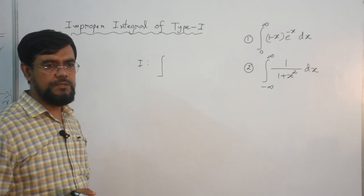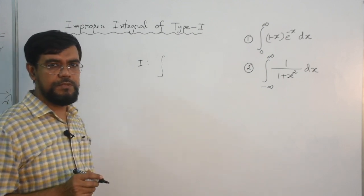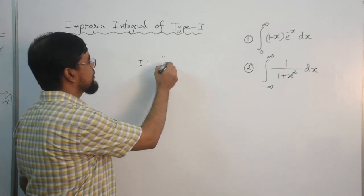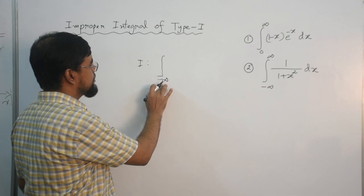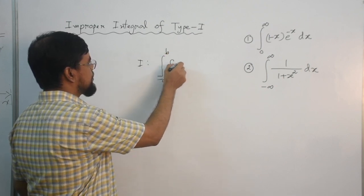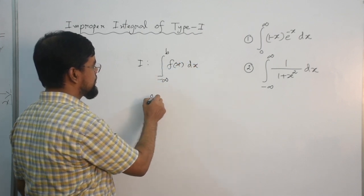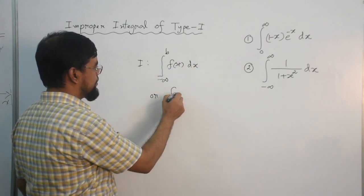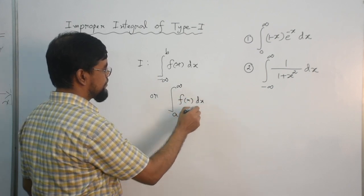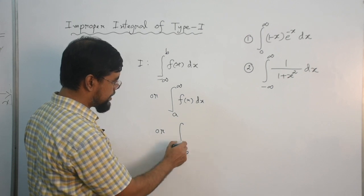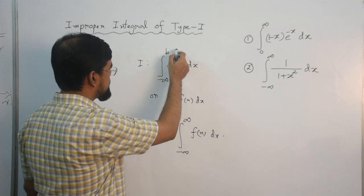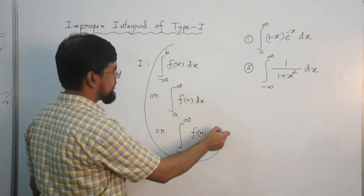To understand this, you need to look into the limits of integration. If the lower limit is infinity — for example, lower limit is negative infinity and upper limit is B — or the upper limit is infinity, or both lower and upper limits are infinity, then this is an improper integral of type 1.